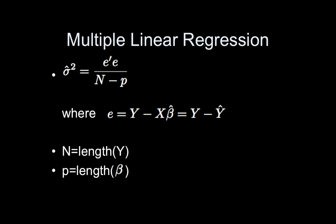We can use matrix math to estimate our sigma hat as well. You take the residual E, which is simply y minus y hat, where y hat is just X times beta hat. You take E, transpose it, and multiply it by E. Write it down and prove it to yourself — E is n by 1, so E transpose is 1 by n, and E transpose E gives a single number: basically the sum of the squared residuals, exactly the same as before. Then you divide by the degrees of freedom, which is n minus p — n is the length of y, p is the length of beta — number of subjects minus number of parameters in your model.